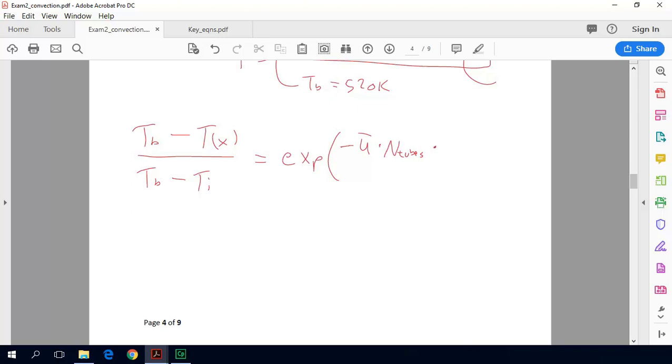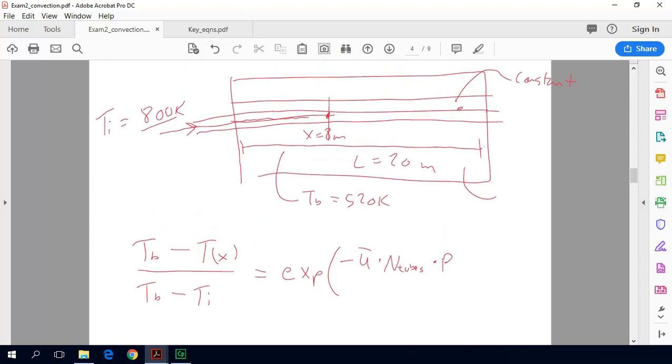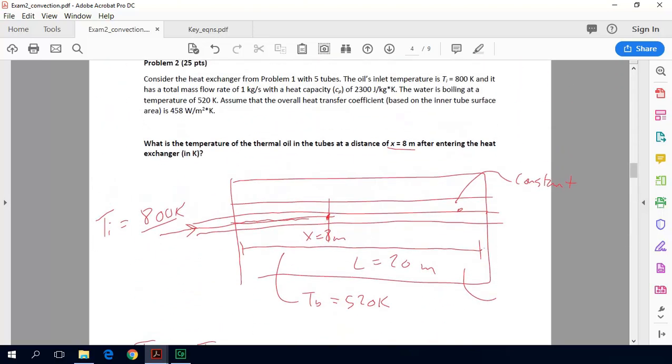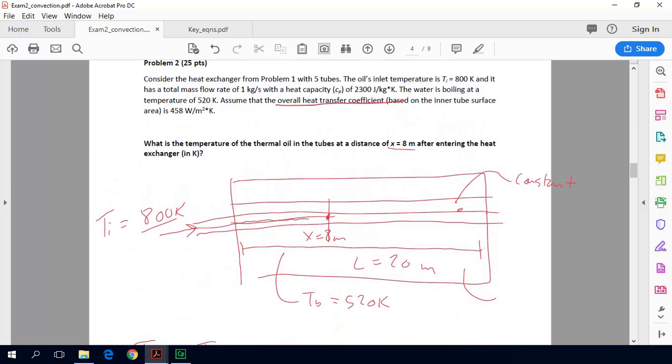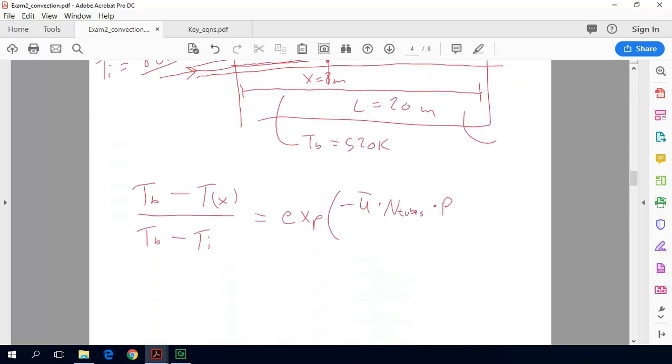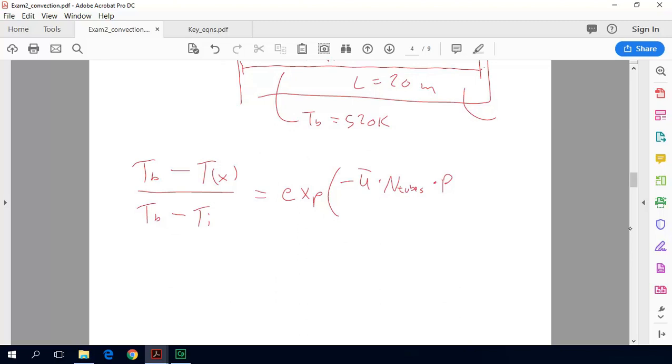Times the perimeter, the inner perimeter of each tube. Notice that our overall heat transfer coefficient is based on the inner tube surface area. So we're going to want to use this P on the inside of the tube times X, our distance in the tube, divided by M dot Cp of the oil. So that's our whole equation.